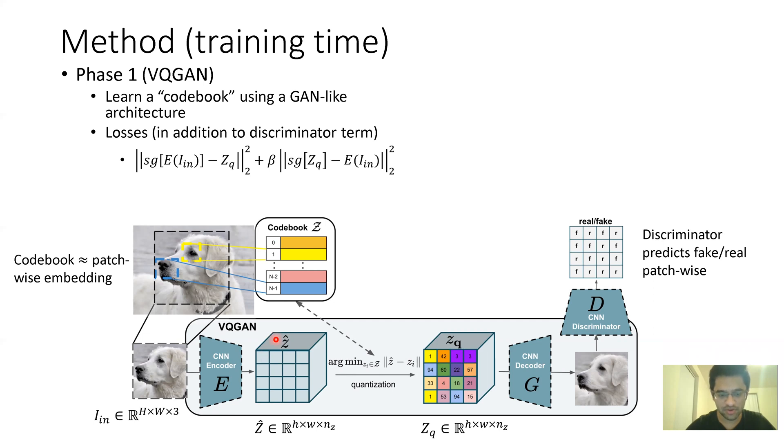For example, this vector will be closest to probably the first vector in the codebook, so you'll replace this by the first vector at that position. Similarly, the second position happens to be close to the 42nd position, so the 42nd vector goes here. The decoder gets this discrete representation - discrete because there are only n minus one vectors here - from which it has to reconstruct the image. They train this entire thing in a GAN-like style. There is a discriminator, and you have that min-max loss. The discriminator is just like a patchwise discriminator, so instead of saying the image is fake or real, it says if a particular patch is fake or real for all patches.